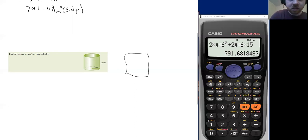And this length is just going to be 2πr, because that's the circumference. And then this length is going to be h.